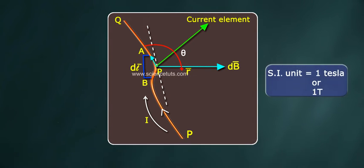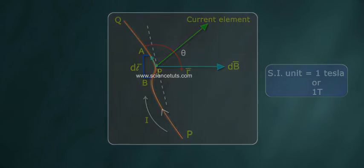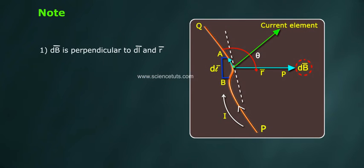Direction of dB is given by right hand screw rule. SI unit is 1 Tesla or 1 T.